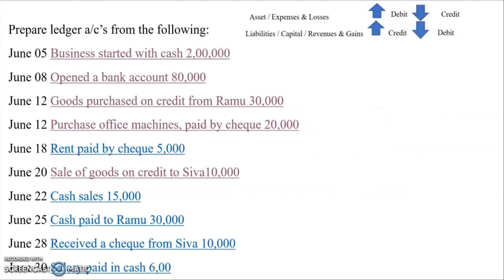I have taken a question for example: prepare ledger accounts from the following transactions. The first transaction is June 5 — business started with cash. The two accounts affected are capital account and cash account. Capital comes under the second group (liabilities, capital, revenues and gains). When we bring in capital, the capital amount increases, so we credit it.